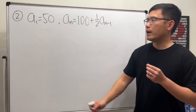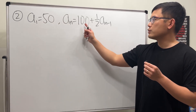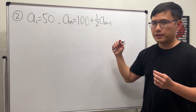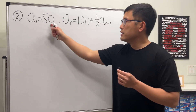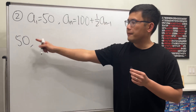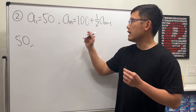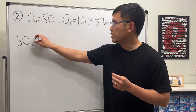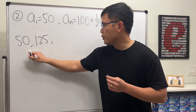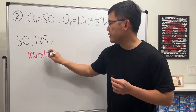Now for the second one, we have a1 is equal to 50, and an equals 100 plus one-half times the previous term. We start with 50. Take half of 50, which is 25, and then plus 100, so that's 125. So this is 100 plus half of the previous term.